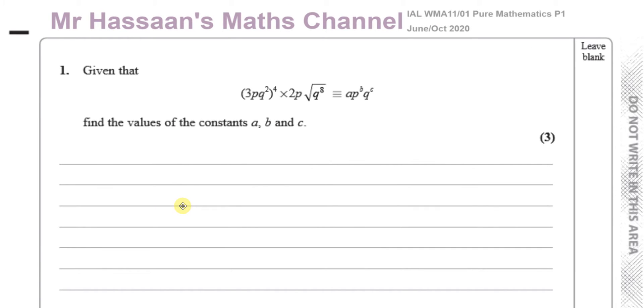It tells us to find the values of the constants A, B, and C in this, given that (3PQ²)⁴ + 2P√(Q⁸) = AP^B Q^C. So we've got to find the value of A, B, and C in this expression. So first, let's basically simplify this index form problem.